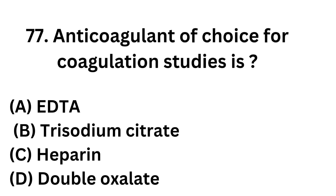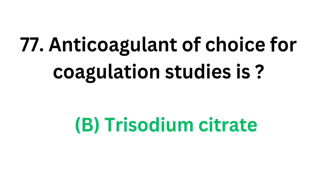Question number 77. The anticoagulant of choice for coagulation studies is: Option A: EDTA. Option B: Trisodium citrate. Option C: Heparin. Option D: Double oxalate. The correct answer is Option B: Trisodium citrate. The anticoagulant of choice for coagulation studies is trisodium citrate.